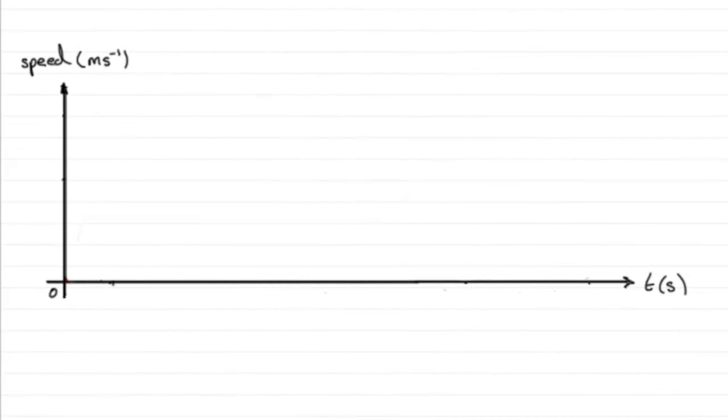Now for this first part, we're told to sketch a speed-time graph for this girl who runs 400 meters in 84 seconds. Make sure you draw your horizontal axis for time, label it in seconds, and your vertical axis speed, measured in meters per second.